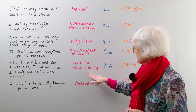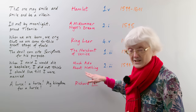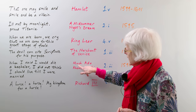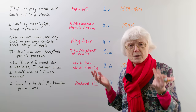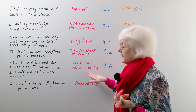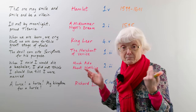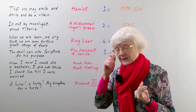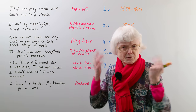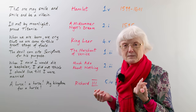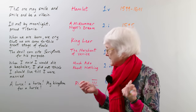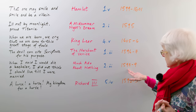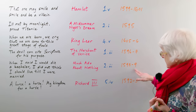That's Much Ado About Nothing. The titles are also very interesting — Much Ado About Nothing meaning a lot of fuss, a lot of trouble about nothing. It's strange for a playwright to give it that title, but it's a comic title for a comic play. That's from Act 2, Scene 3, and the play was written 1598 to 1599.